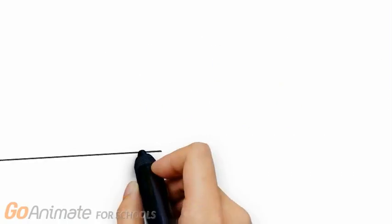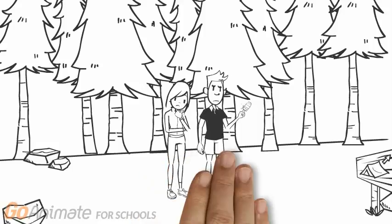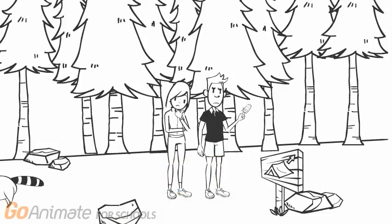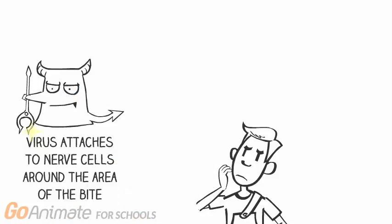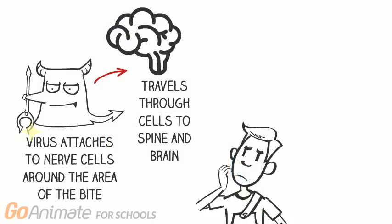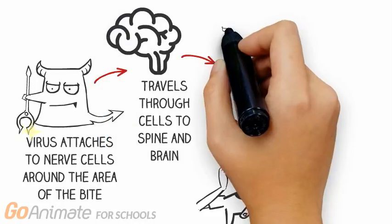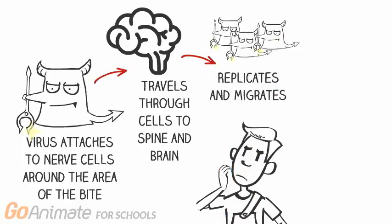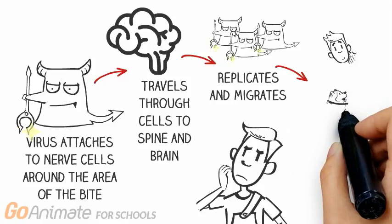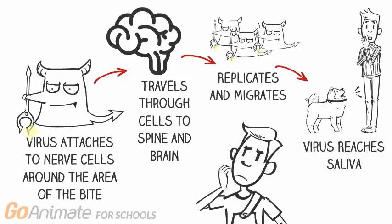Humans can pick up the rabies virus when they are bitten by an animal infected with rabies. To be infectious, the virus must be present in the saliva of the animal. When an animal is bitten, the rabies virus attaches to the nerve cells around the area of the bite. The virus then travels to the central nervous system — the spine and brain. Once there, the virus replicates and migrates to other tissues and organs, including the salivary gland, where a bite can then transmit the virus to another animal.